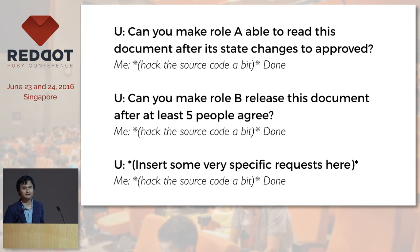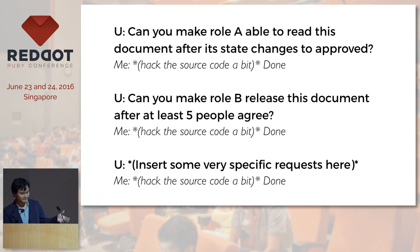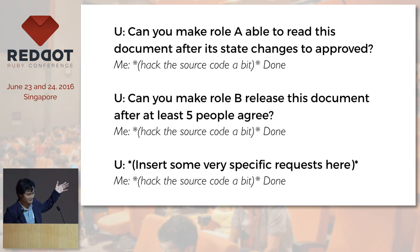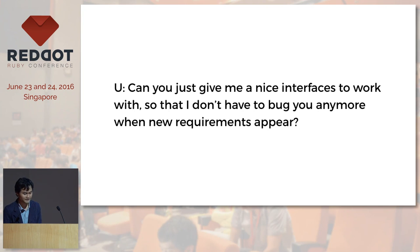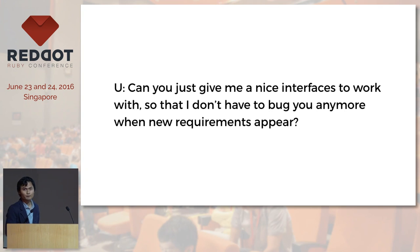Several years ago I had a requirement from my client, and the conversation went like this. At that time I used CanCan or Pundit, and he asked if I could make something like this. I had to hack the source code a bit and then hand it back to them. After several rounds back and forth, he asked: can you just give me a nice interface to work with? At that point I realized that the current authorization gems like CanCan and Pundit don't really provide a framework for storing rules and authorization in the database — we have to modify our source code before we can give it back to them.